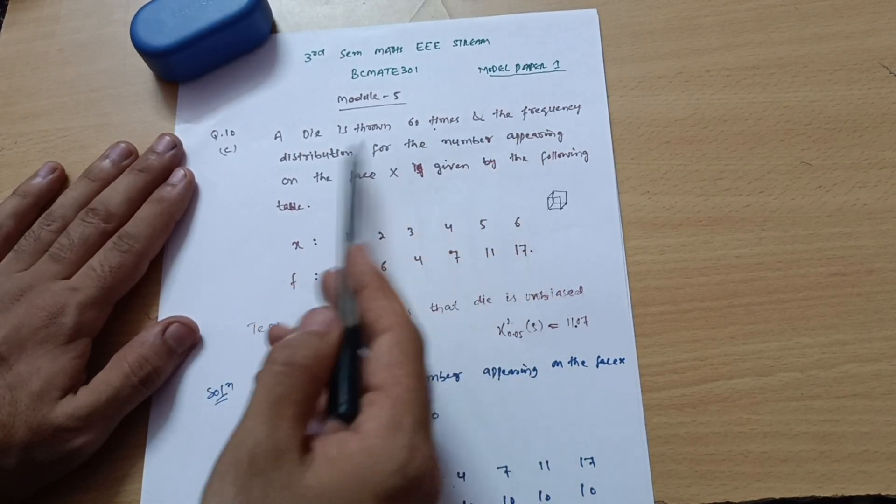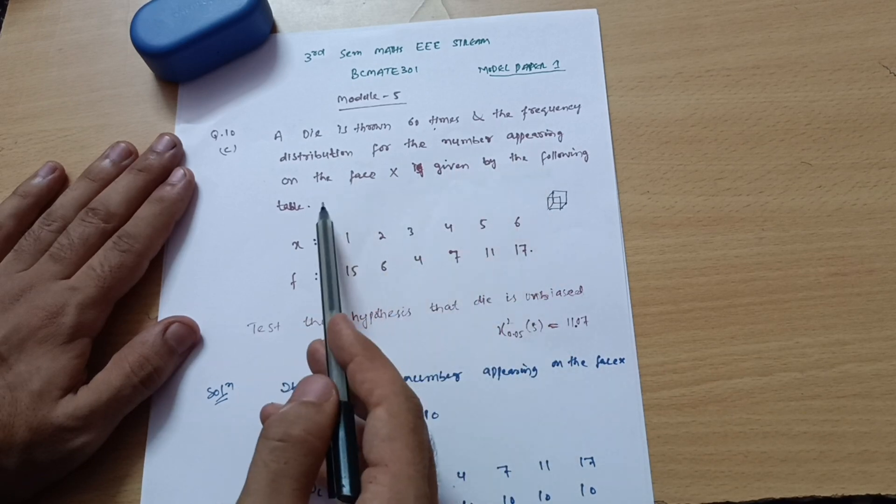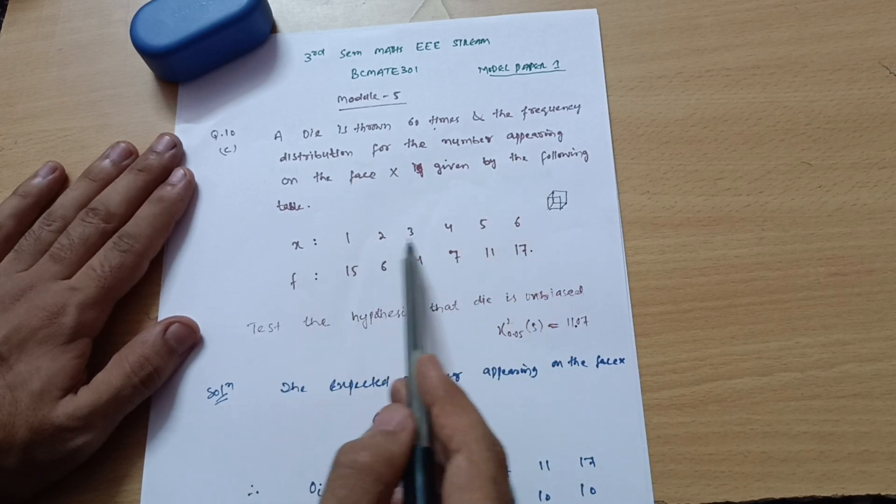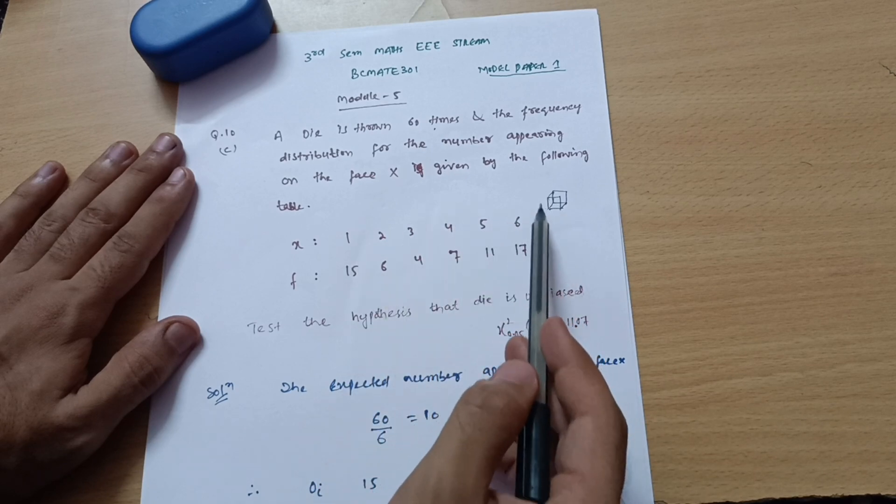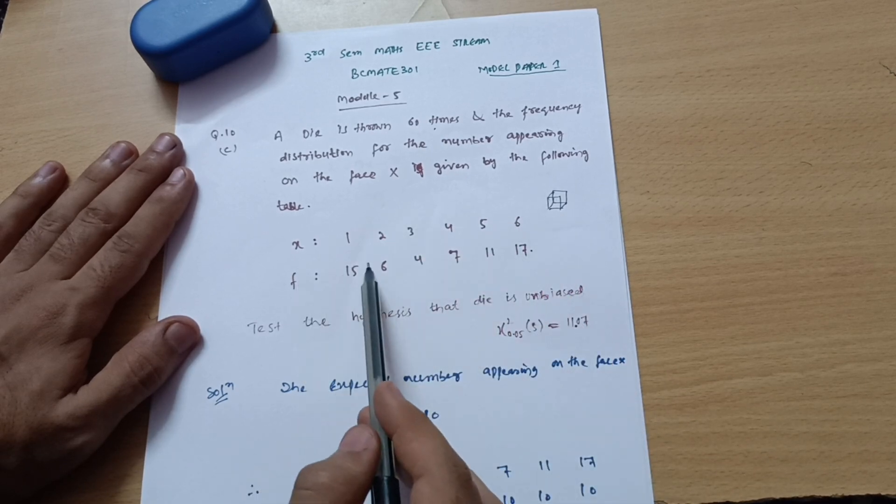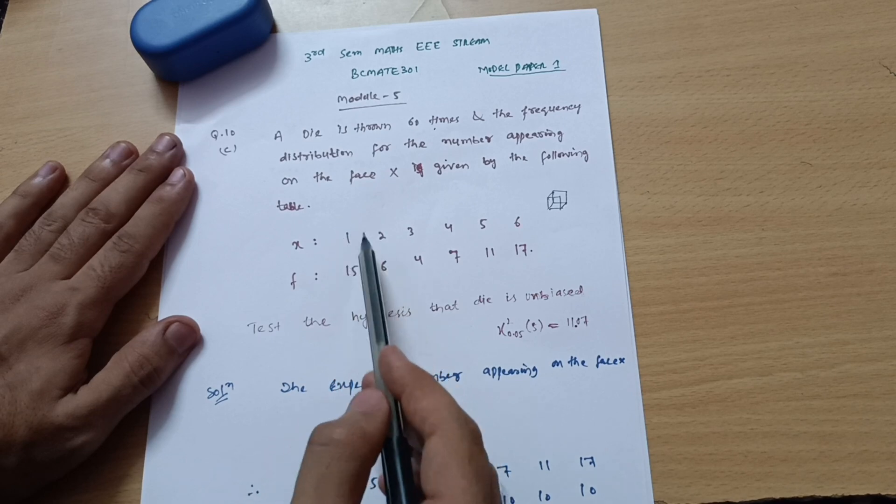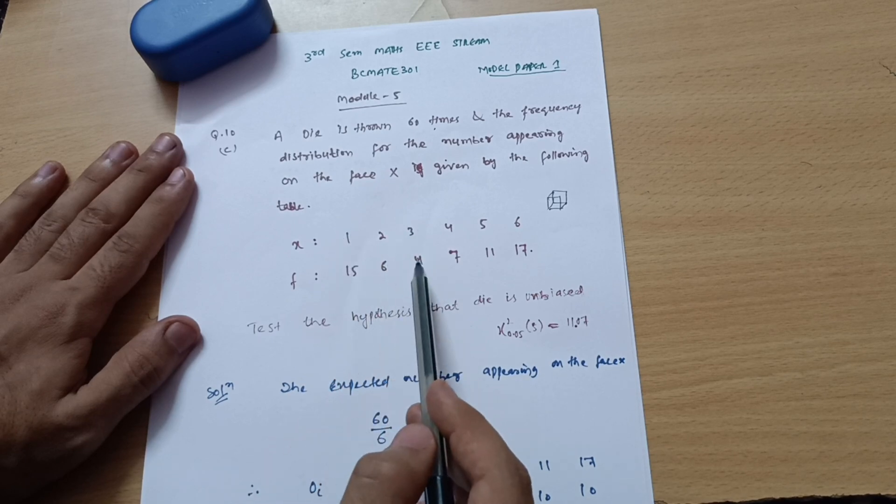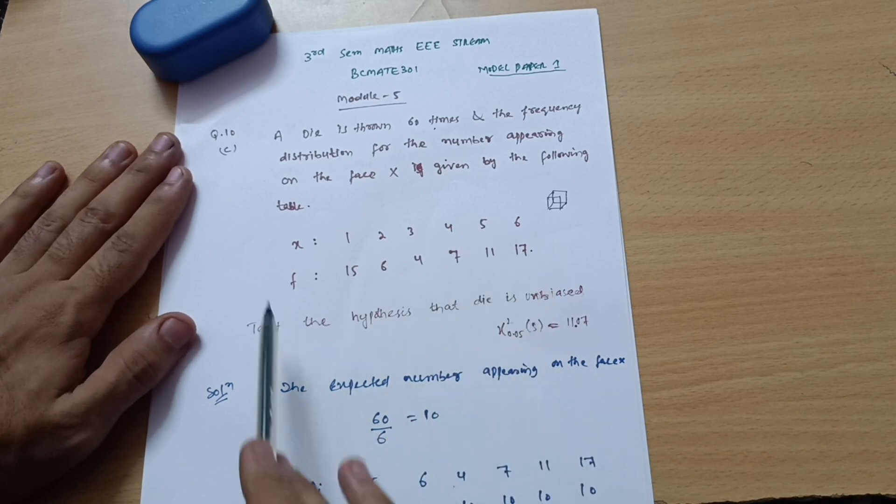A die is thrown 60 times and the frequency distribution for the number appearing on the face x is given by the following table. This is the x, these are the six faces of a die as you might have seen. The die has six faces. These are the numbers: this face is appearing 15 times, this face is appearing 6 times, this face is appearing 4 times. Likewise these faces are appearing this many times. This is the data which is given in the problem.